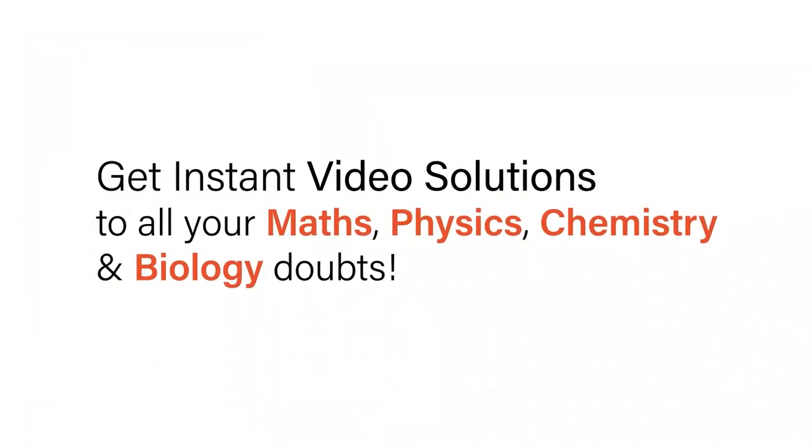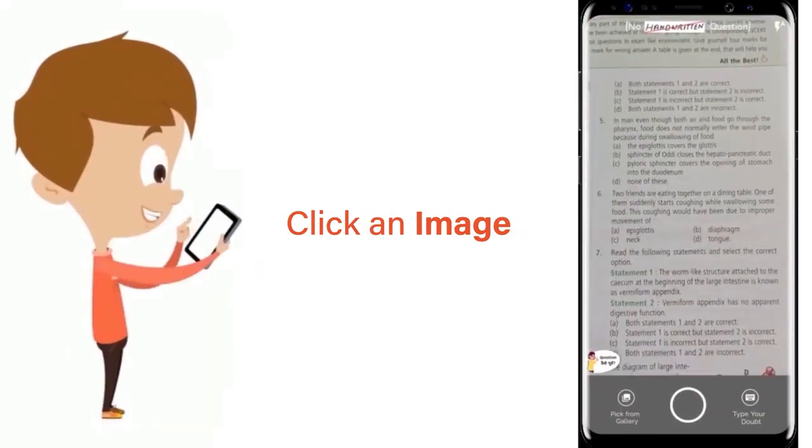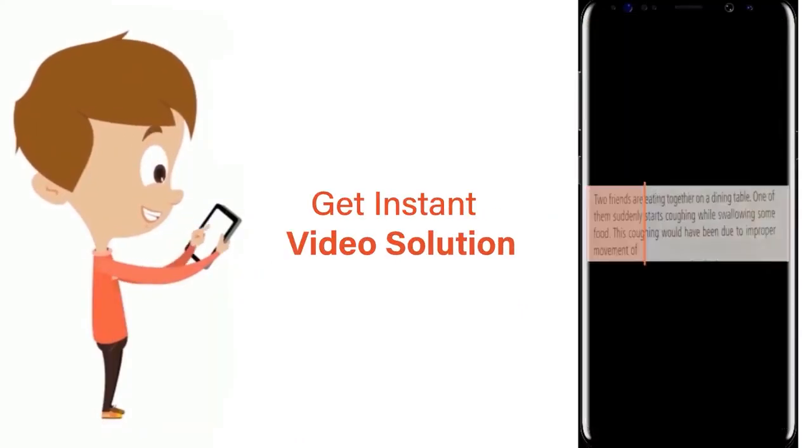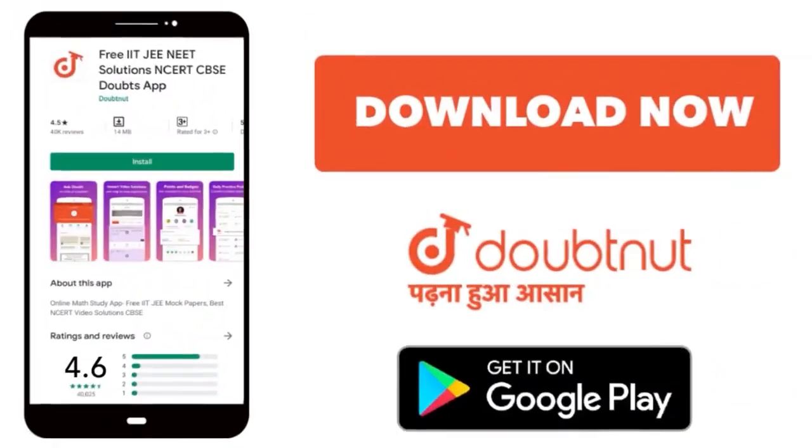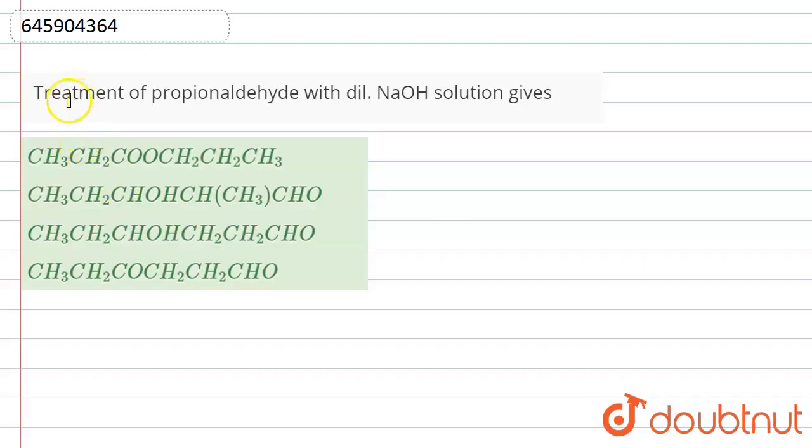With Doubtnut, get instant video solutions to all your maths, physics, chemistry, and biology doubts. Just click the image of the question, crop the question, and get instant video solution. Download Doubtnut app today. Hello students, the question is treatment of propionaldehyde with dilute NaOH solution gives what product.